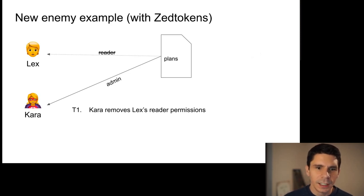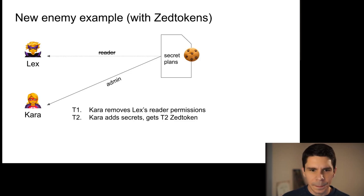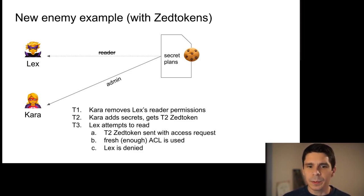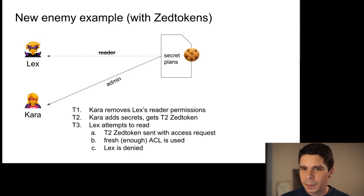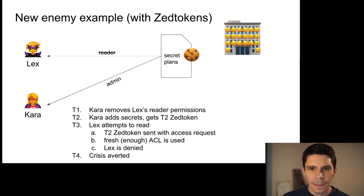With Z tokens: at T1 Kara removes Lex's reader permission. At T2 Kara adds the secrets and gets a Z token back from SpiceDB — an opaque cookie representing a point in time. At T3 Lex attempts to read; the T2 Z token is sent with the data. That causes SpiceDB to use a fresh enough ACL, which includes Kara removing Lex's reader permission. Lex is denied access — everyone's happy.